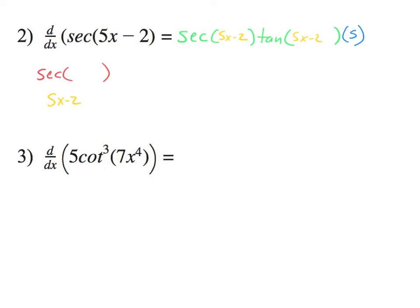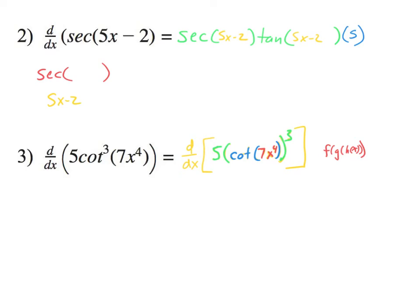The next one is a little trickier. Let me rewrite it first. This is 5 cotangent of 7x to the fourth, all to the third. Can you see that the outside piece in green is the whole thing cubed? Inside of that is a cotangent in blue, and inside of that is 7x to the fourth in red. There are three things nested inside each other — you would call this f of g of h of x. So f is the green, g is the cotangent in blue, and h is the red.